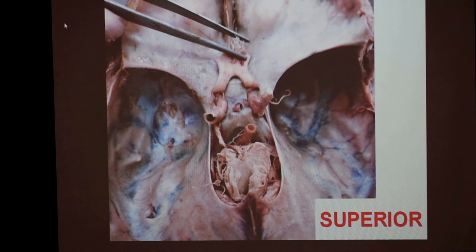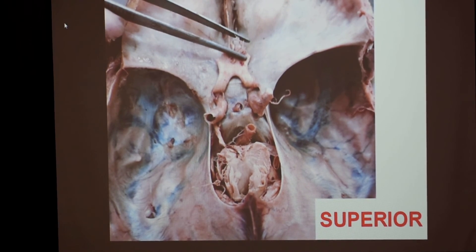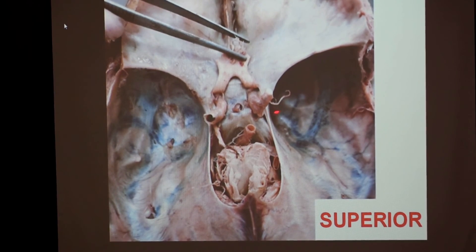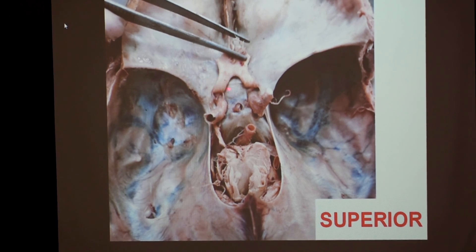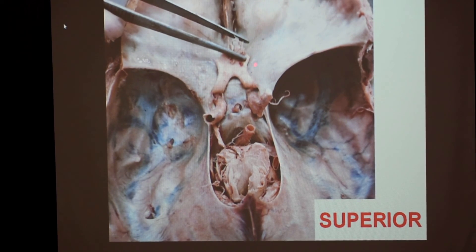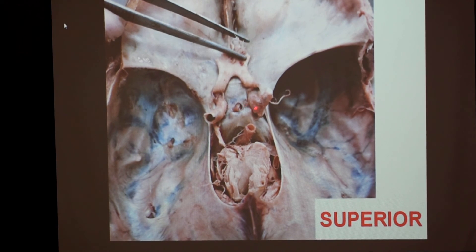Now, let us see the superior relations of the cavernous sinus. Here is the location of the cavernous sinus. In the superior aspect, we have a chiasmatic structure and one artery present superior to the cavernous sinus.